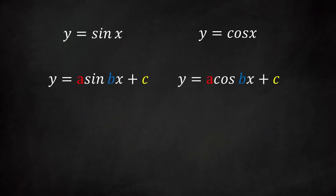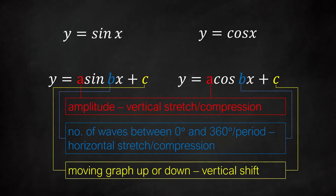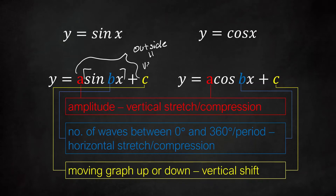The general form of the trig functions includes three parameters. The red A corresponds to the amplitude and affects the vertical stretch or compression depending on the number. The blue B affects the period of the function and corresponds to a horizontal stretch or compression — we'll talk about this next time. Adding or subtracting a number C on the end corresponds to moving the graph up or down, which is a vertical shift. Numbers outside the function — A and C — affect things vertically, while numbers inside like B affect things horizontally.